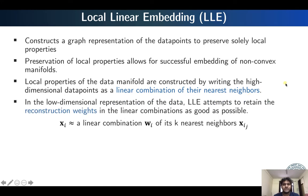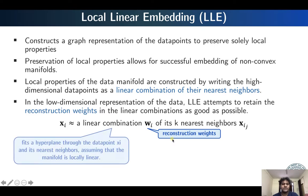In the low-dimensional representation, the goal of this algorithm is to retain the reconstruction weights in the linear combinations as closely as possible. Each high-dimensional data point is expressed as a linear combination of its k nearest neighbors, which are denoted accordingly. By representing each data point as a linear combination of its nearest neighbors, this method is essentially fitting a hyperplane through the data point and its nearest neighbors, which is why it assumes the manifold is locally linear.